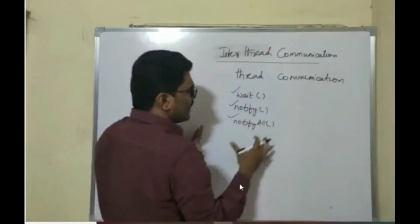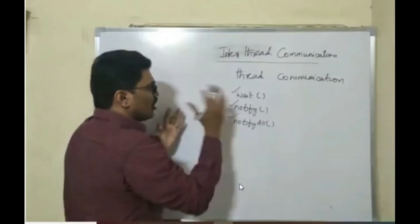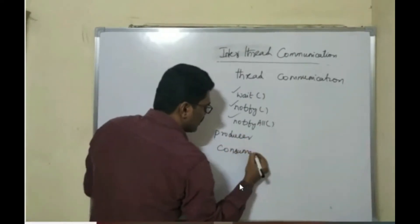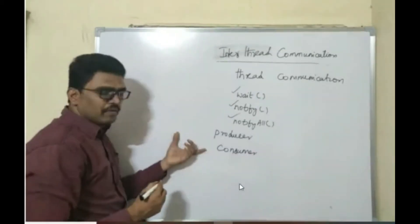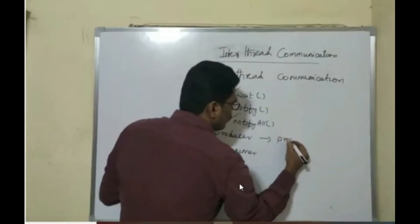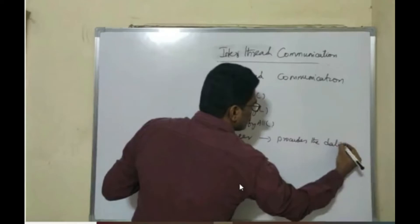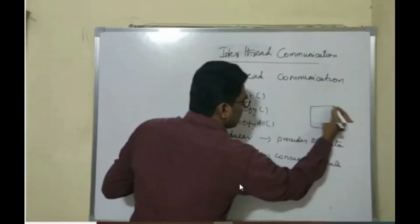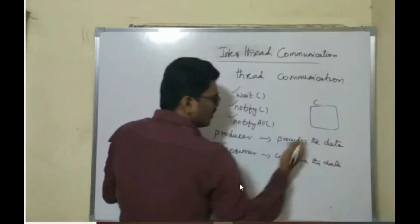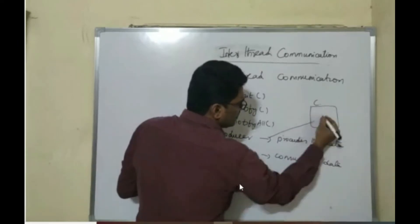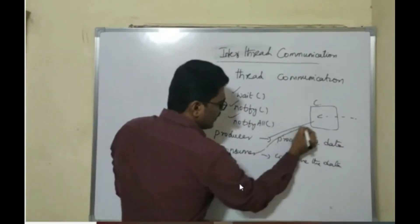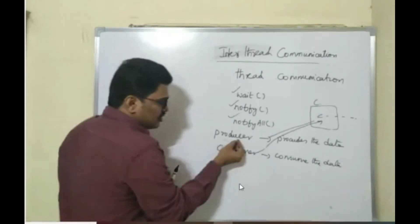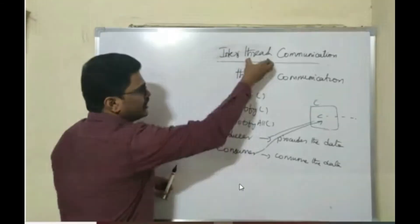Let's discuss why threads need to communicate. The common problem discussed with interthread communication is the producer-consumer problem. The producer is one who produces the data, and the consumer is one who consumes the data. They share a memory location called a buffer. The producer stores data in the buffer and the consumer gets data from the buffer. This is called the producer-consumer problem, and it is normally solved using interthread communication.